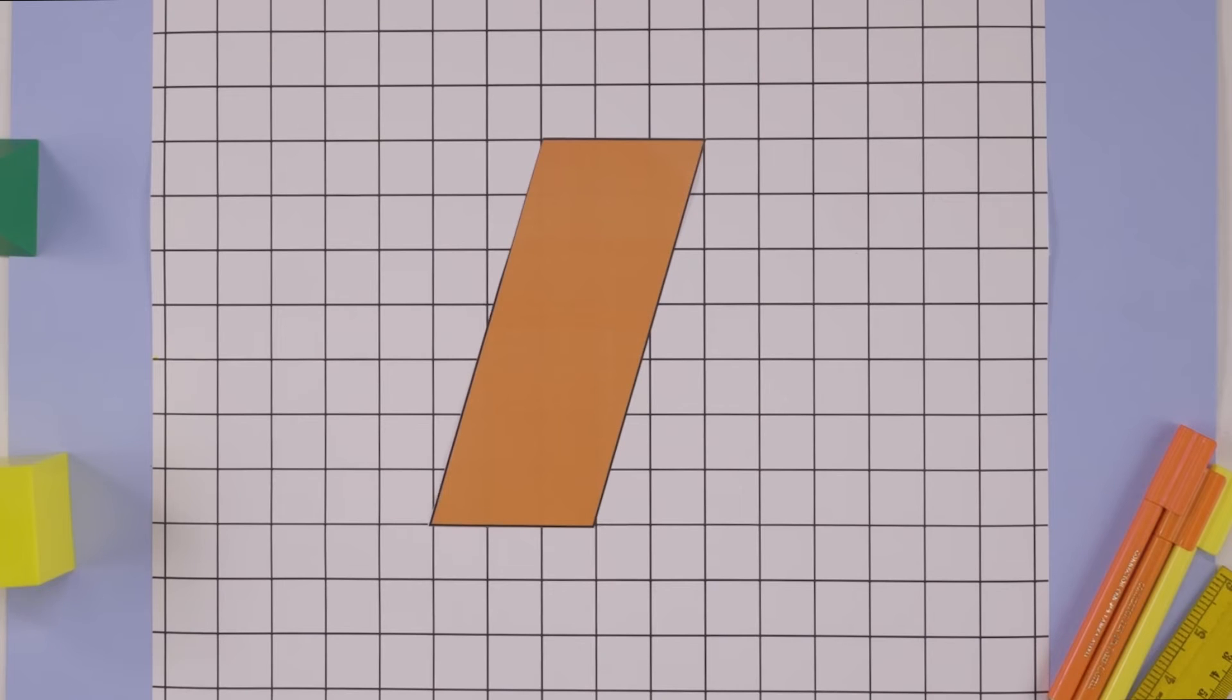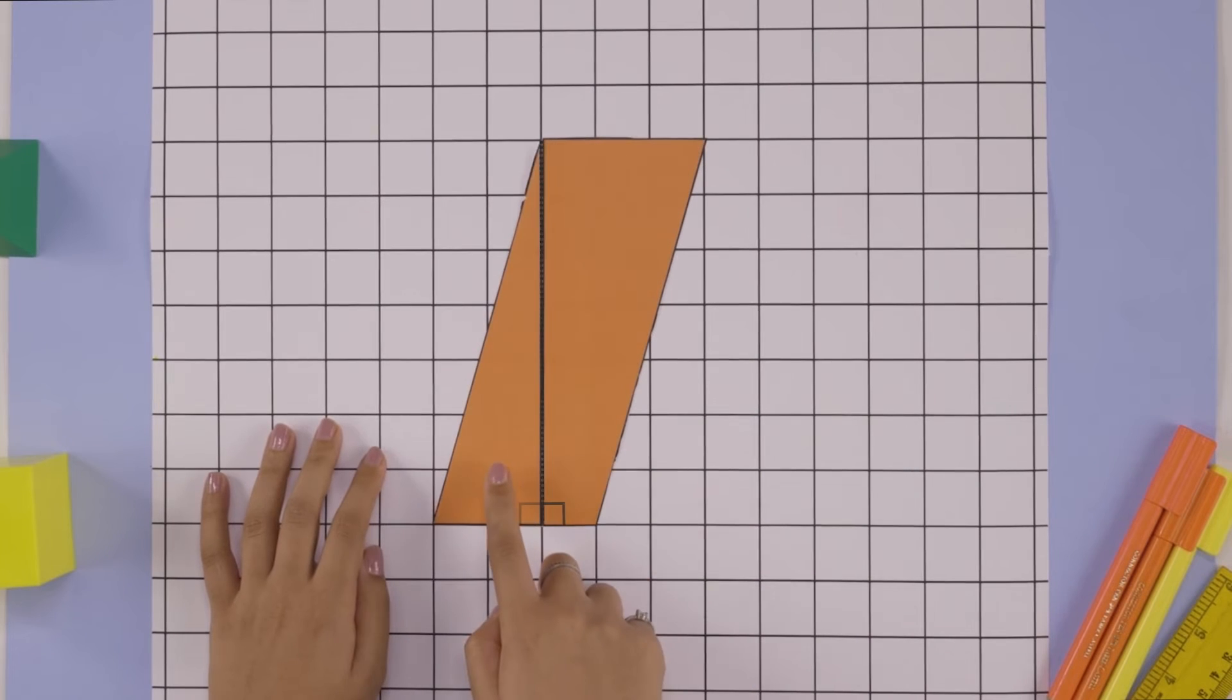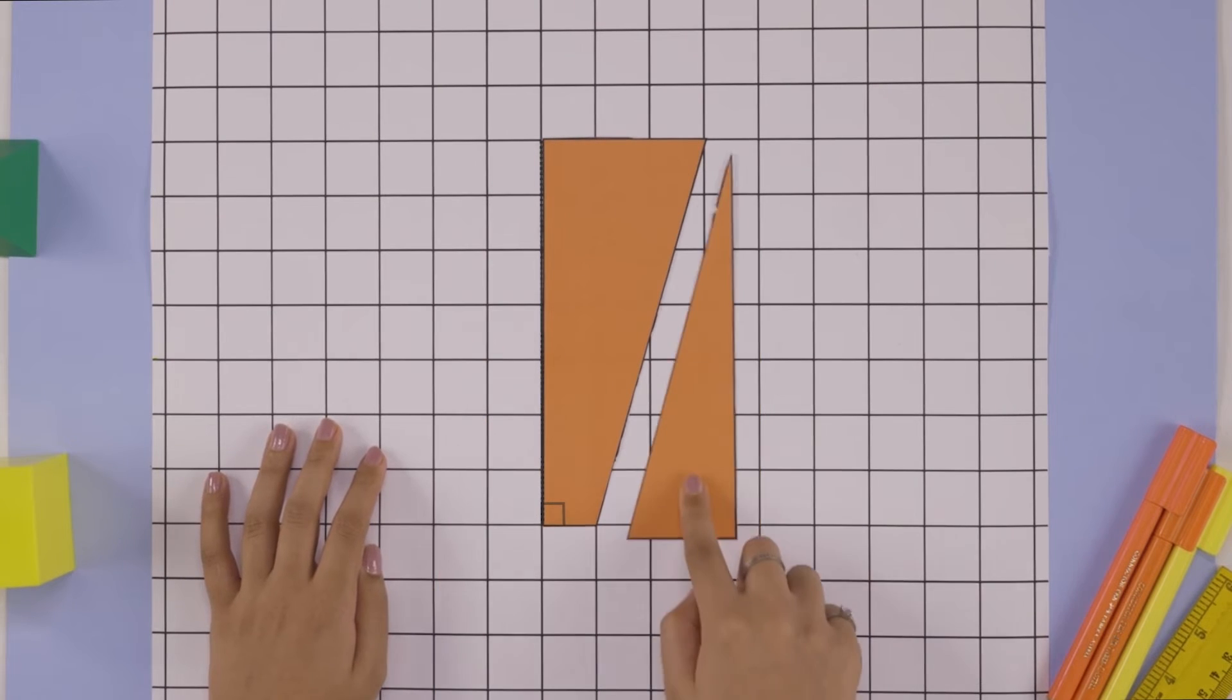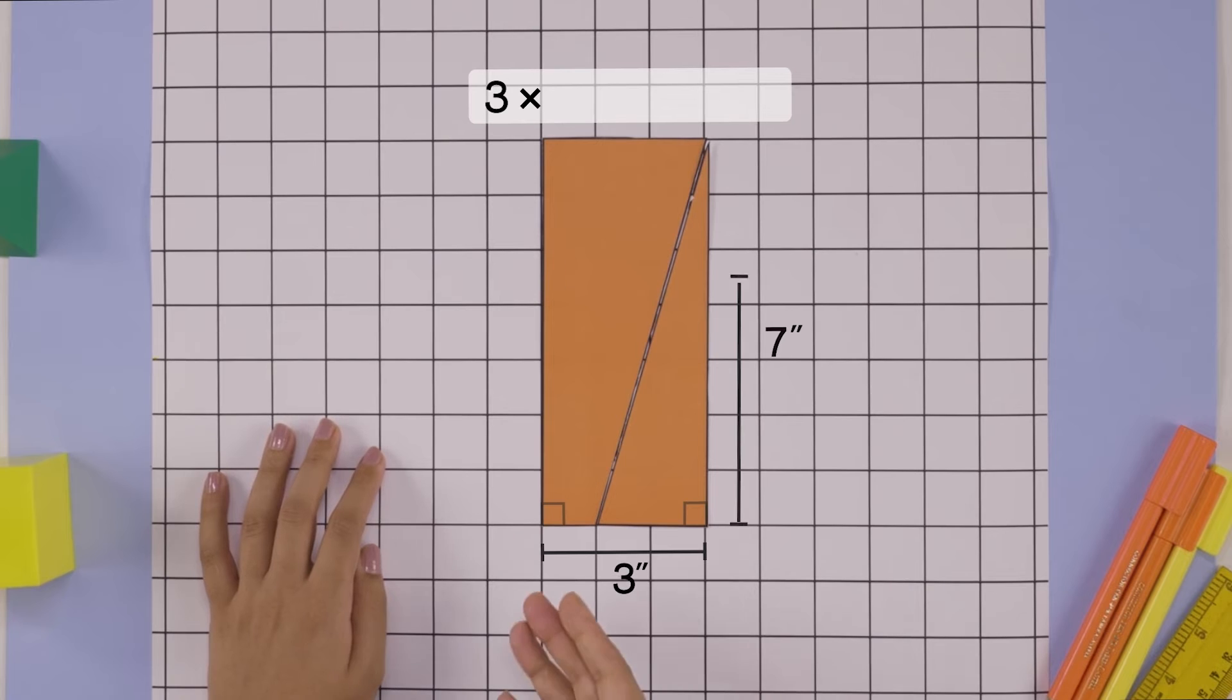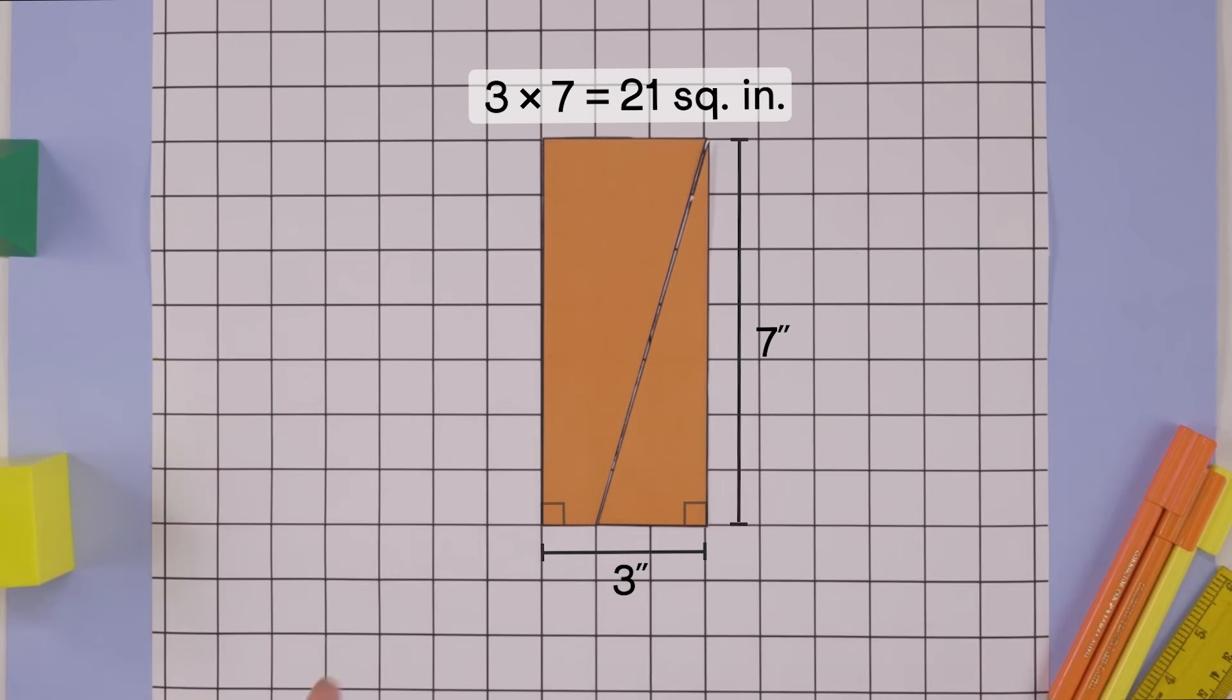How about this parallelogram? Its base equals 3 inches and height equals 7 inches. Again, we can turn this into a rectangle and its area is base times height or 21 square inches.